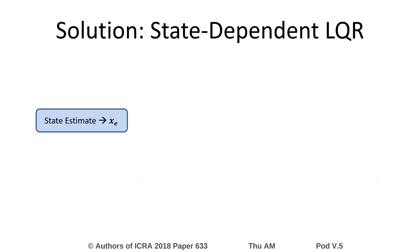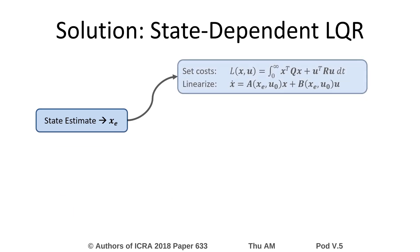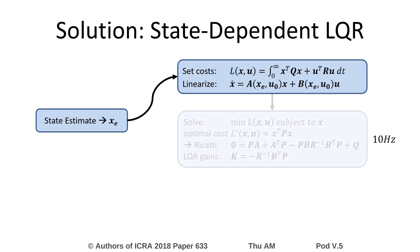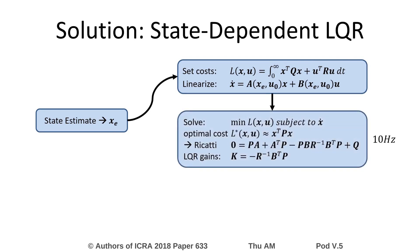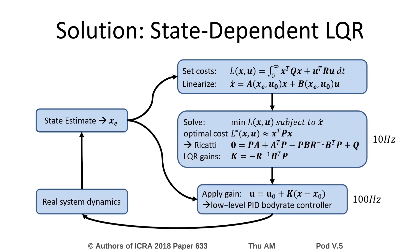Our solution uses the state estimate to recompute the linearization at 10 Hz. We use this linearization to solve the Riccati equation and compute LQR gains fitted to the quadrotor's actual state. These gains are then applied in a faster feedback loop at 100 Hz.